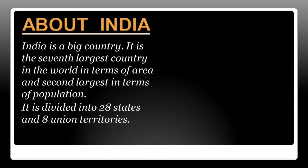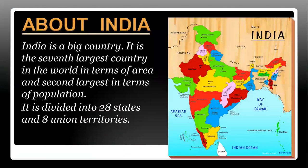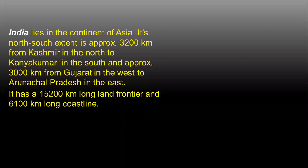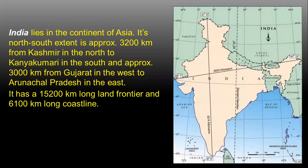India is a big country. It is the seventh largest country in the world in terms of area and second largest in terms of population. It is divided into 28 states and eight union territories. India lies in the continent of Asia.